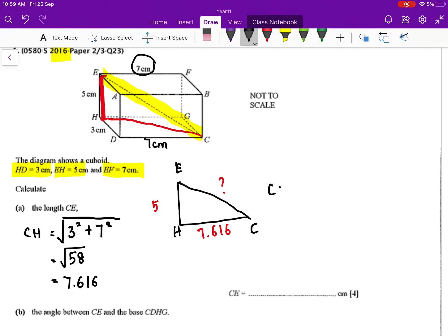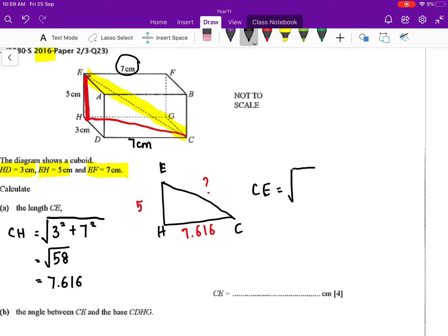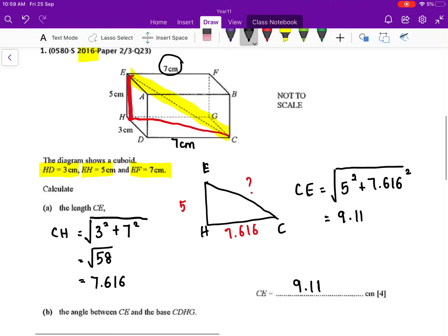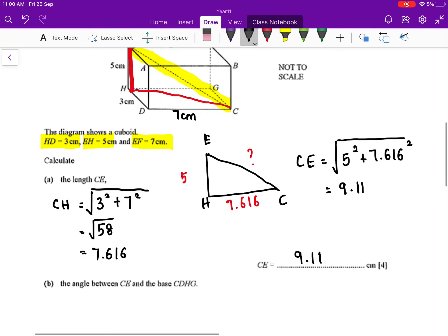Your CE will be the length between 5 and 7.616. I'm going to use Pythagorean theorem again. So 5 squared, I'm going to add on with 7.616 squared. So if you press this in your calculator, you will get 9.11. So that will be your final answer as you have to leave your answer in 3 significant figures.